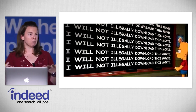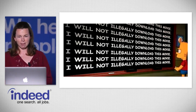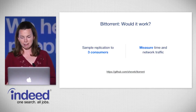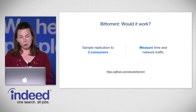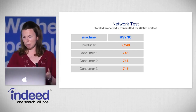BitTorrent is a peer-to-peer communication protocol that can very efficiently transfer large data between many consumers. To evaluate it, they set up a sample replication from a single producer to three consumers, measuring network traffic and download time using an open-source Java implementation, comparing against rsync with a 700-megabyte artifact.